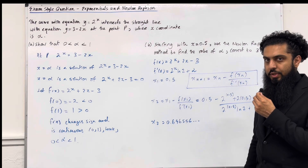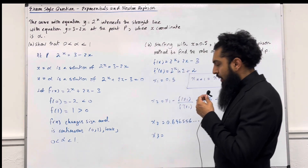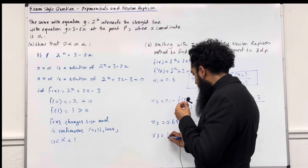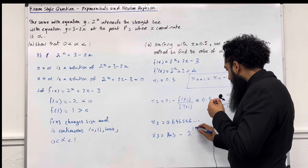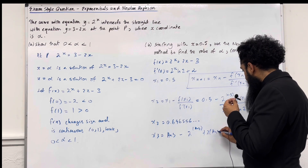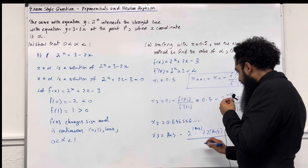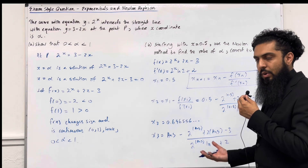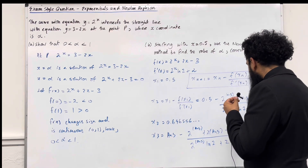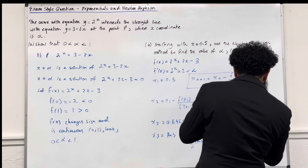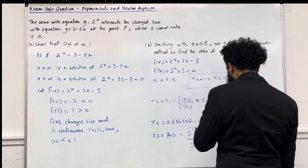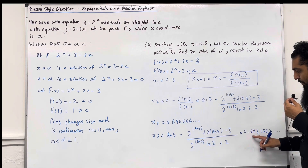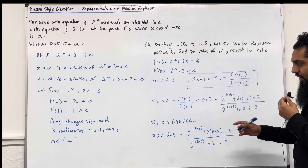Now I'm going to work out the third approximation. x3: using the answer button in my calculator — replacing the 0.5s with the answer button — I get x3 is equal to 0.6921557... To three decimal places, x2 rounds to 0.697, and x3 rounds to 0.692. There is no consistency, so we have to continue the approximation.